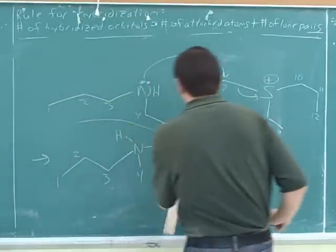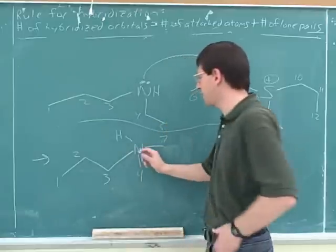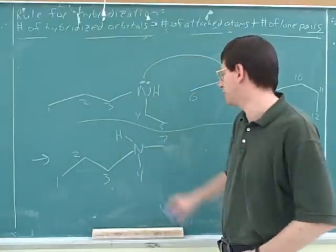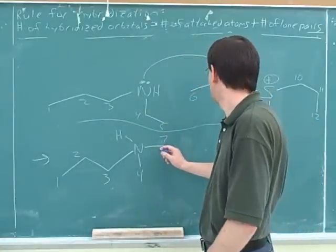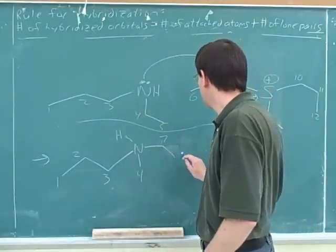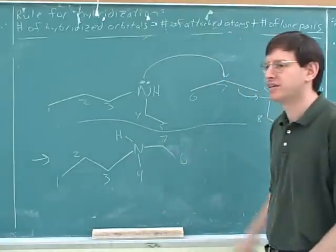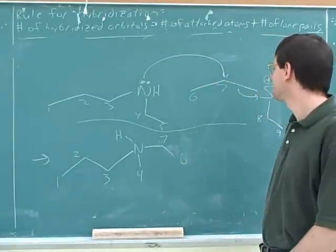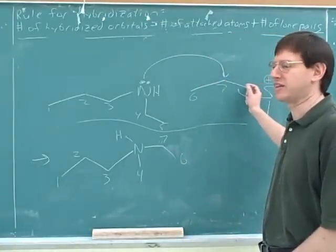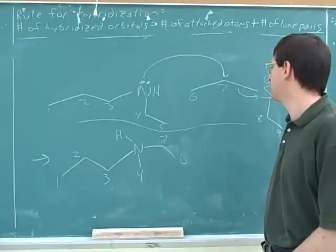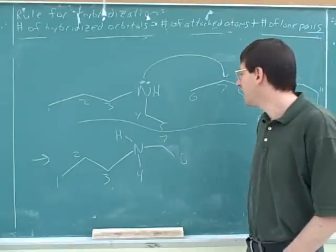So how would the one atom at a time technique work here? These are all the things the nitrogen is attached to. And now what's the number 7 attached to? 6. Is it attached to anything else? S, but the bond is broken. So no, it's not attached to anything else because we're breaking this bond. Nothing else except the hidden hydrogens, which we don't need to draw.